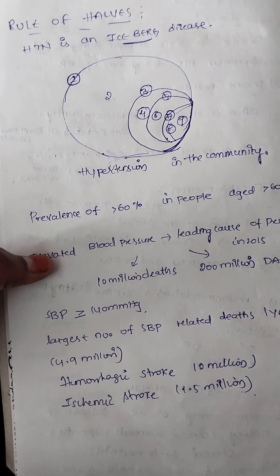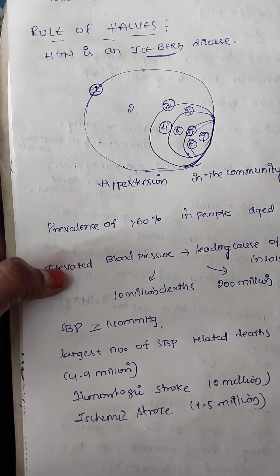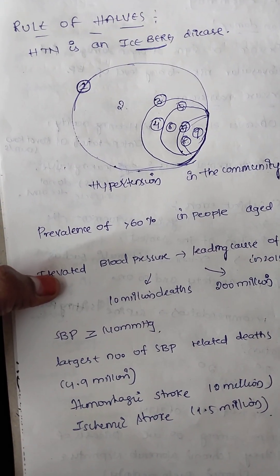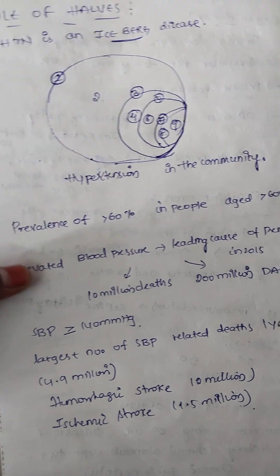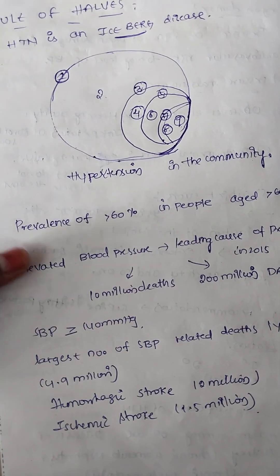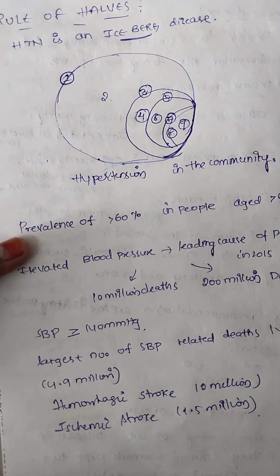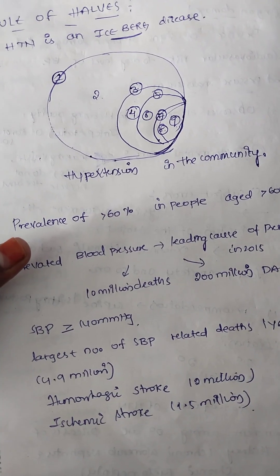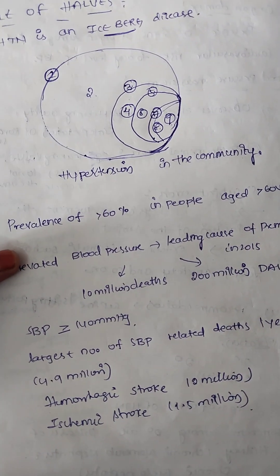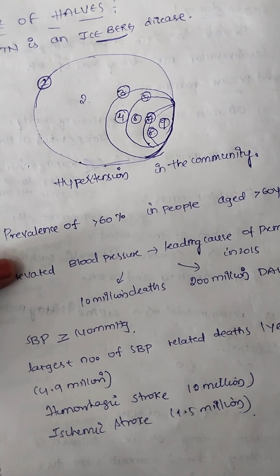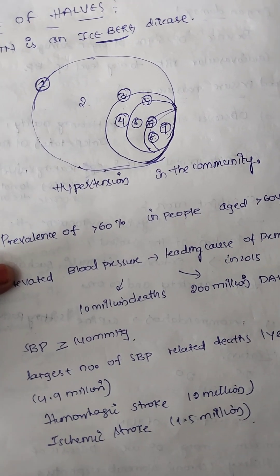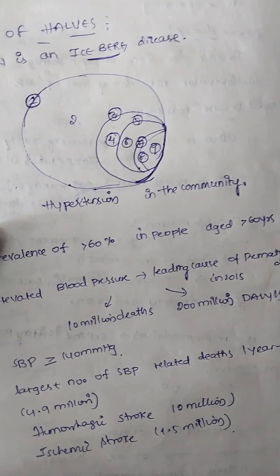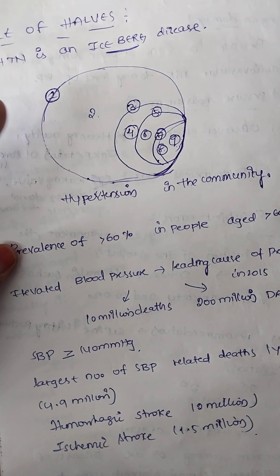What is iceberg disease? In an iceberg, most of it is submerged — under the water — and only the tip of the iceberg is visible. Similarly, only the diagnosed cases of hypertension are visible, the 'tip.' But there are many more cases which are untreated or undiagnosed, like the submerged bottom of the iceberg. That is why hypertension is compared to an iceberg disease.